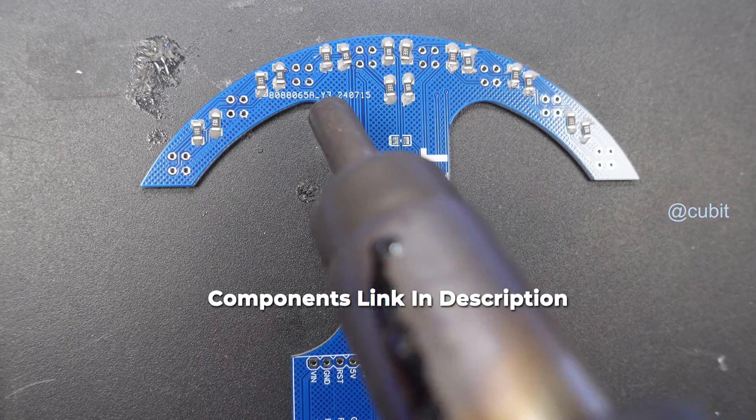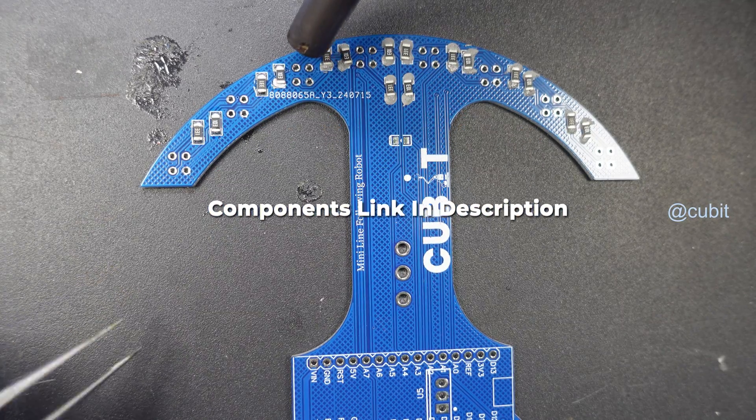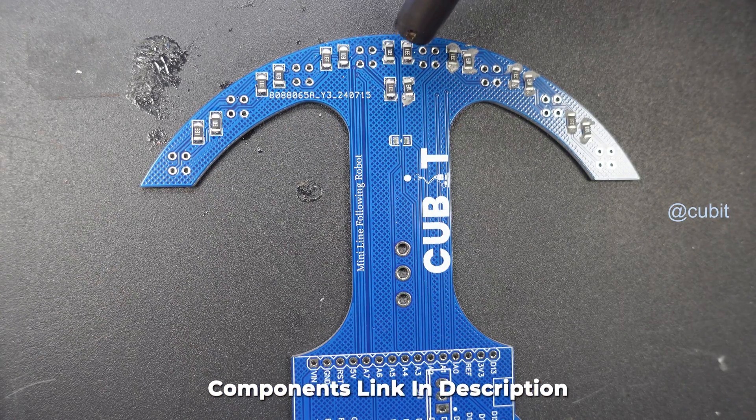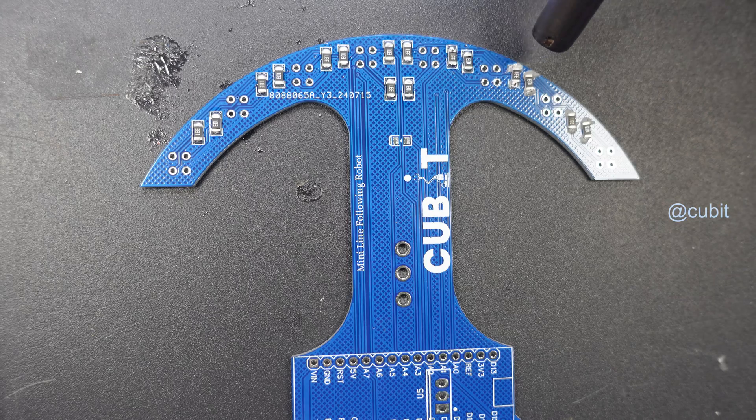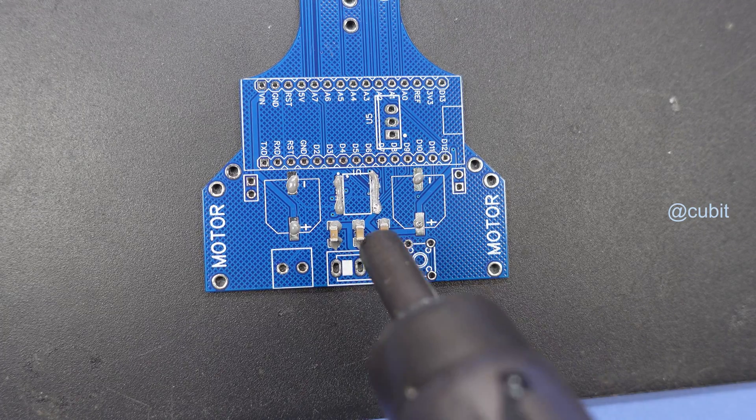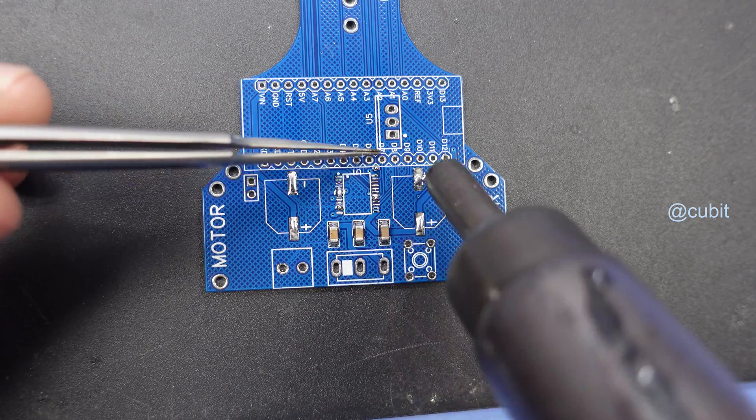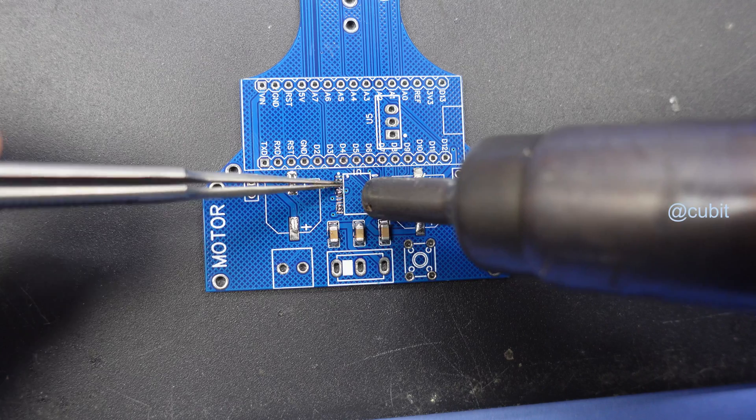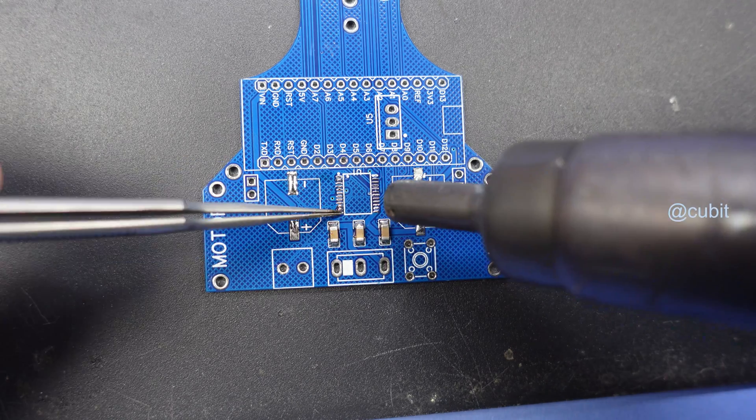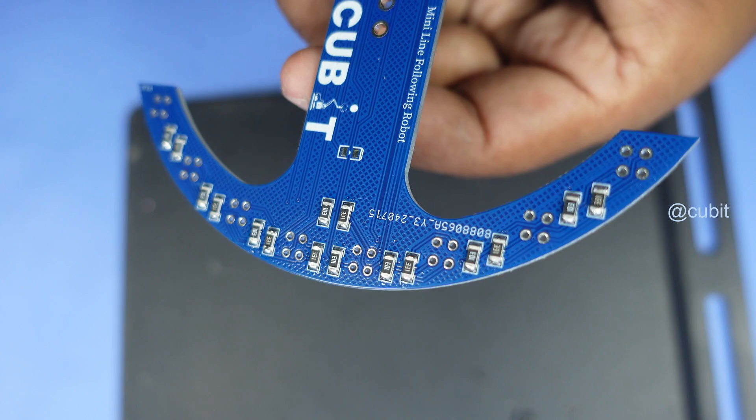Once all the components are in place, we heat the board with a hot air gun to ensure proper soldering. The result is a clean PCB with well-soldered joints.